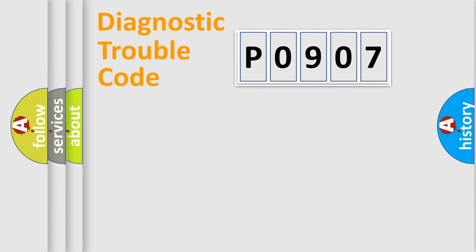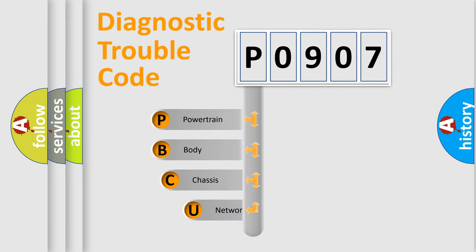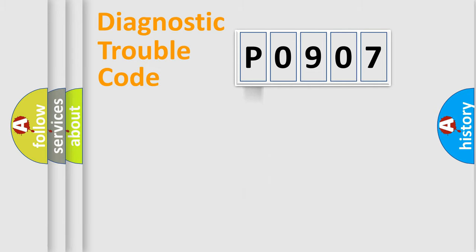Let's look at the history of diagnostic fault code composition according to the OBD2 protocol, which is unified for all automakers since 2000. We divide the electric system of an automobile into four basic units: Powertrain, Body, Chassis, and Network.